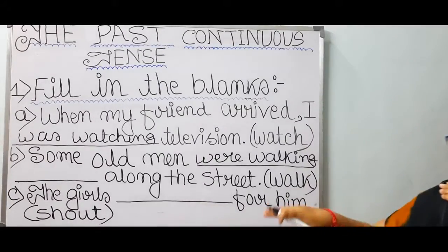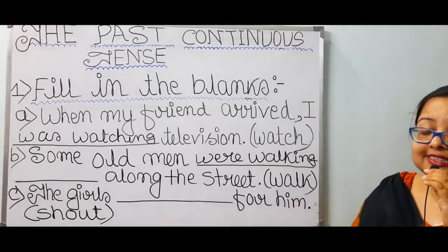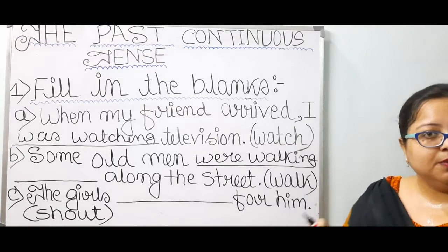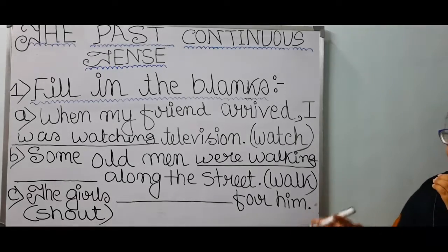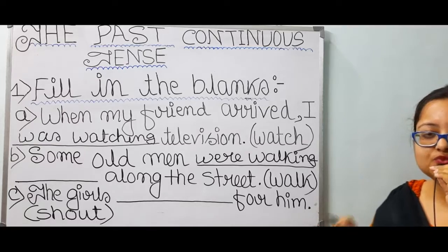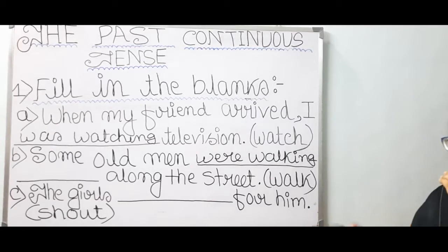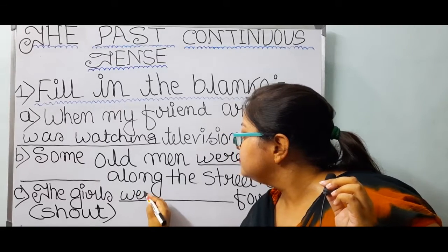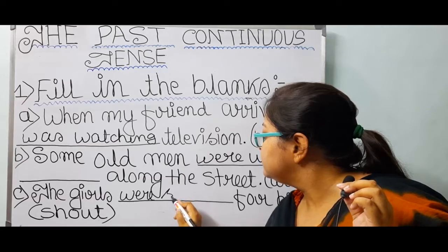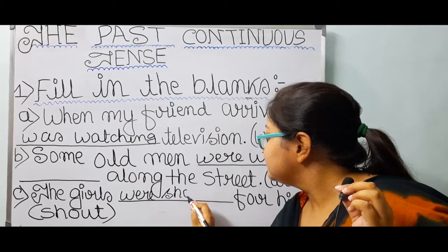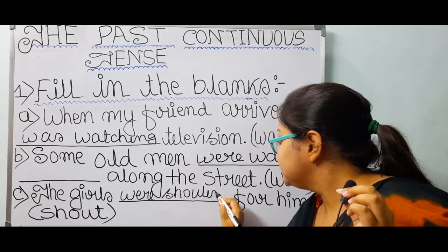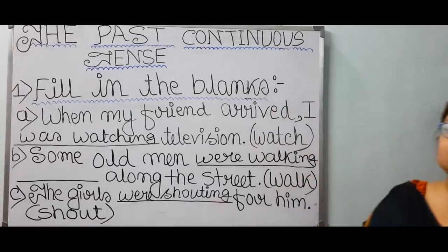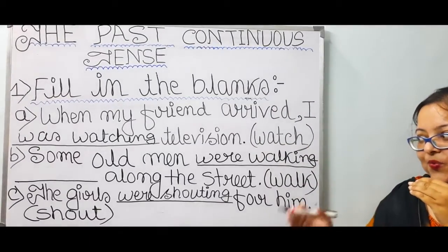Number C: The girls dash for him. The girls were shouting. 'Girls' is plural in number, so 'were' is suitable. Then, shout + ing = shouting — first form of verb plus -ing. The girls were shouting for him.